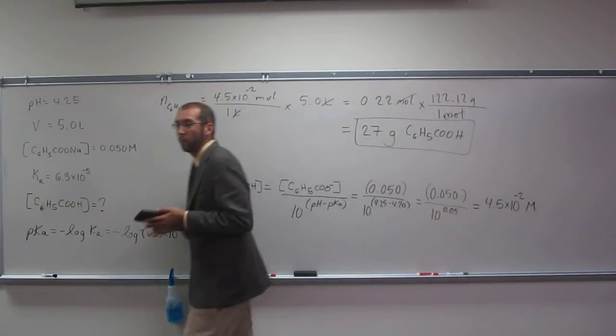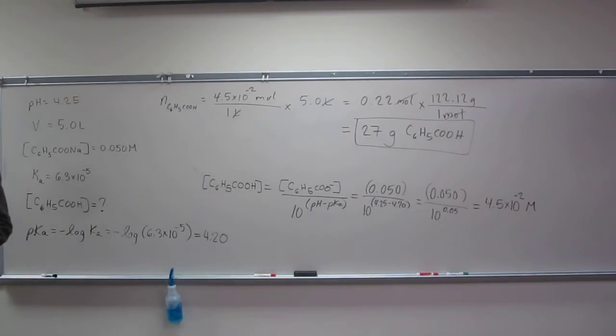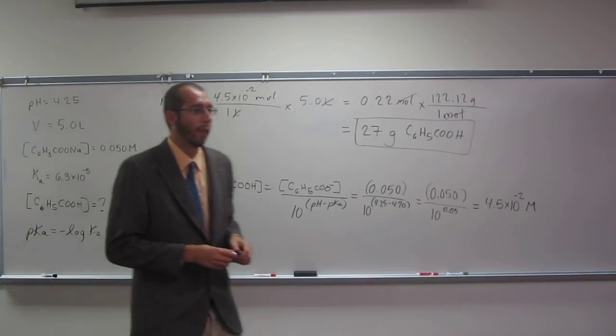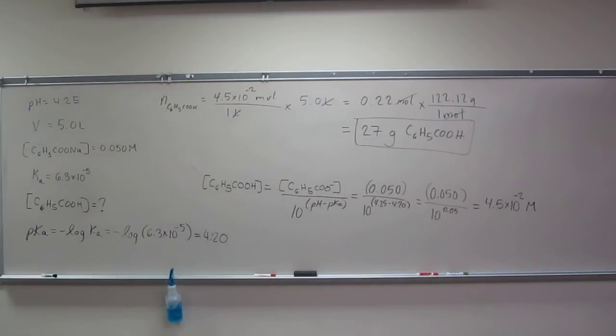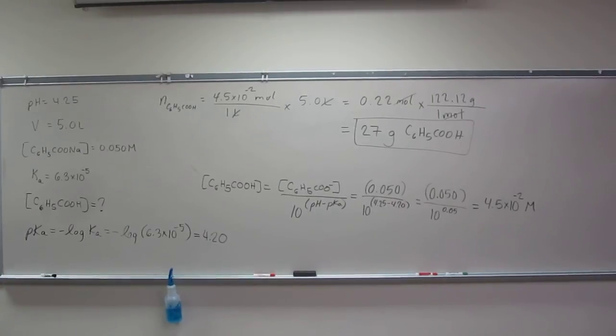So that's how you would prepare that buffer. You have to add 27 grams of benzoic acid to the five liters of the sodium benzoate solution that you already have. Does everybody understand? Make sure you can use Henderson-Hasselbalch. Questions before I kill it?